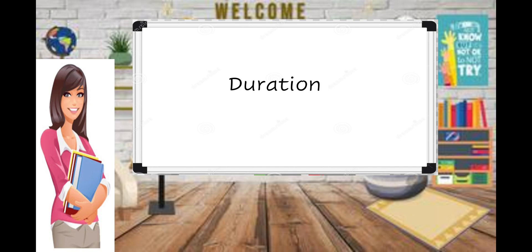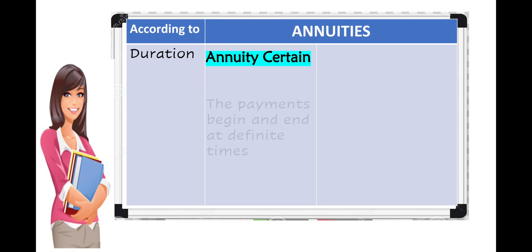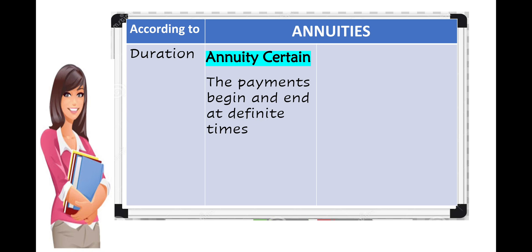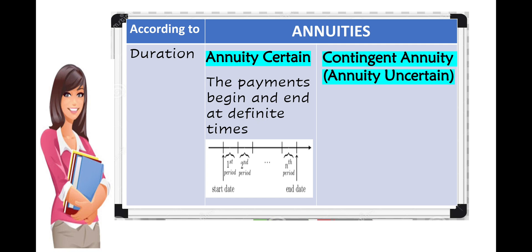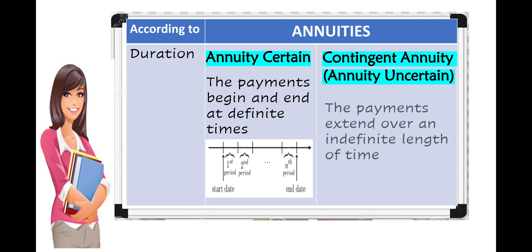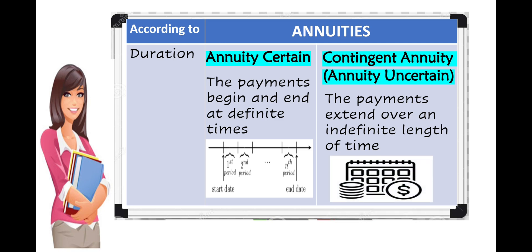Annuity is also classified according to duration. Annuity certain: payments begin and end at definite times — for example, if it is one year, you start today and end on the 12th month. Contingent annuity, or annuity uncertain: payments extend over an indefinite length of time — for example, your pension, which you receive as long as you are alive.